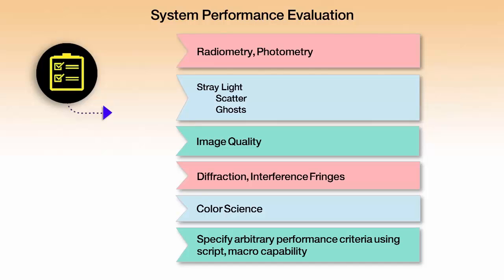We may look at stray light — the paths that the light takes that are undesired. For example, there may be scattered or ghost images on a detector that cause image contrast to be reduced. Stray light is the reason this product was created in the first place, so it's very strong in that area.